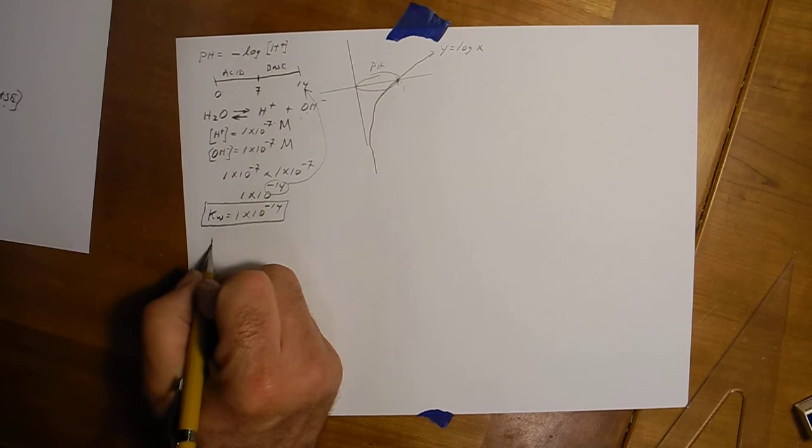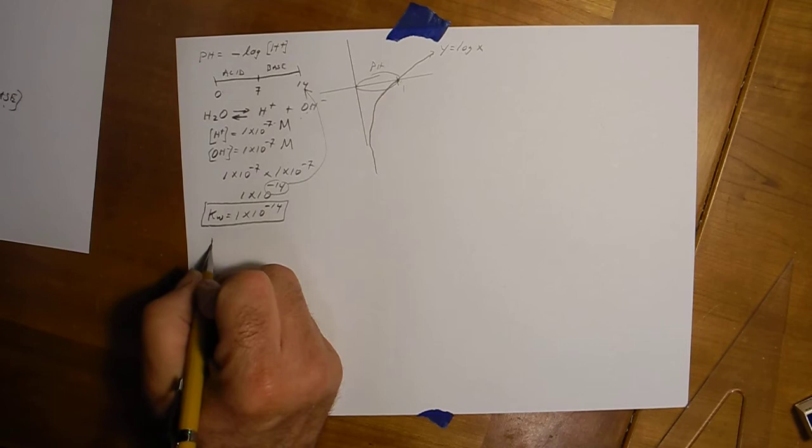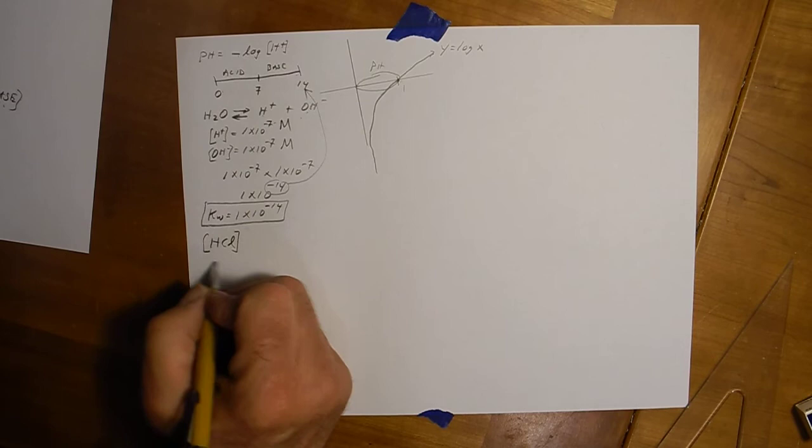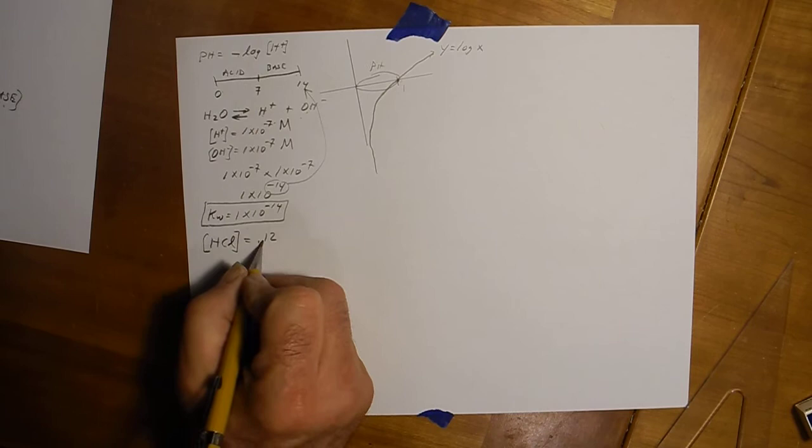Let's do an example. Suppose you have HCl, hydrochloric acid, the simplest acid. Suppose it's concentration, these brackets means molarity, and the concentration is, how about like 0.12?